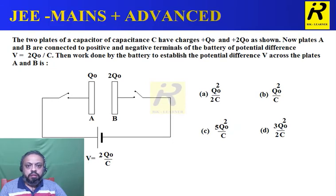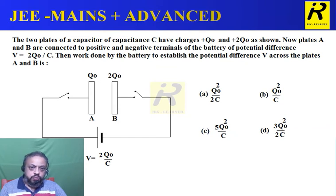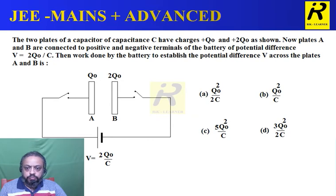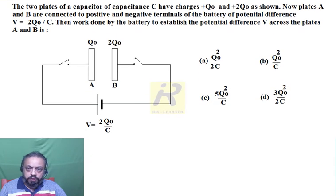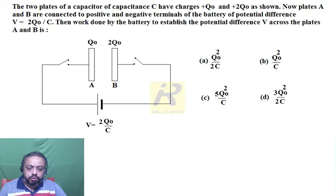The question says: the two plates of a capacitor of capacitance C have charges plus Q₀ and plus 2Q₀. Plates A and B are connected to the positive and negative terminals of a battery of potential difference V equals 2Q₀ divided by C.